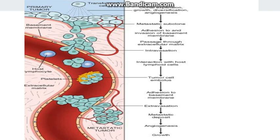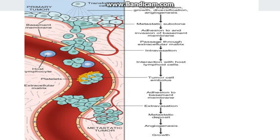Now let's discuss in general about the molecular basis of how the tumor metastasizes. Starting from the primary tumor, it will separate from its fellow tumor cells, degrade the basement membrane and the extracellular matrix, and enter into a vessel — here we are discussing hematogenous spread. In the vessel, it will form a tumor cell embolus with the help of other blood cells. When it finds an adequate secondary site, it will start extravasating, the whole steps will repeat again, and it will form a metastatic deposit.